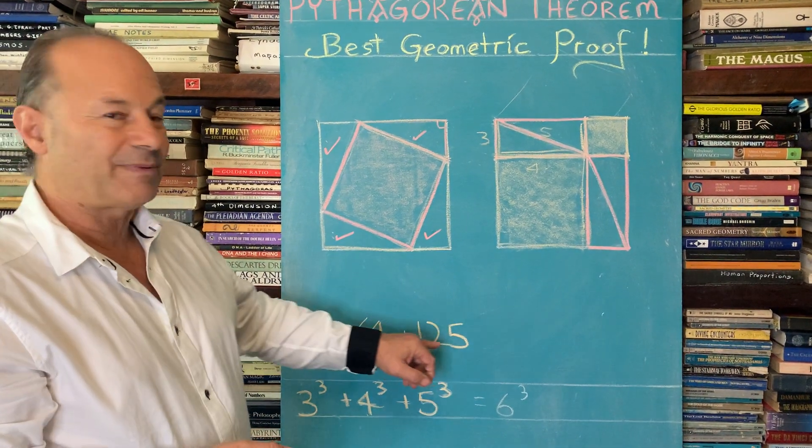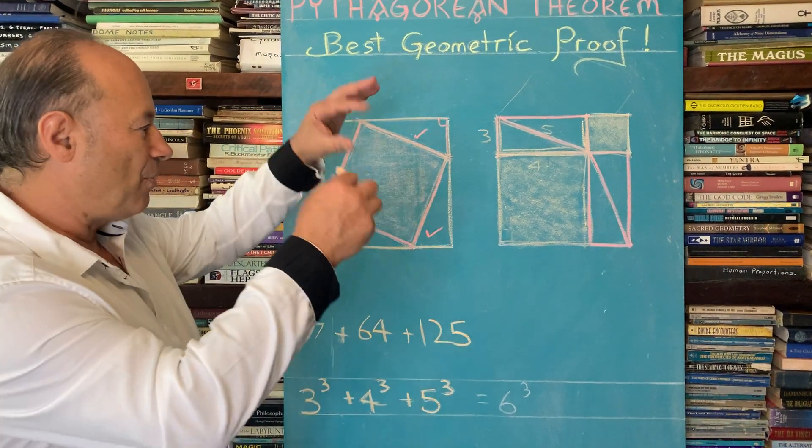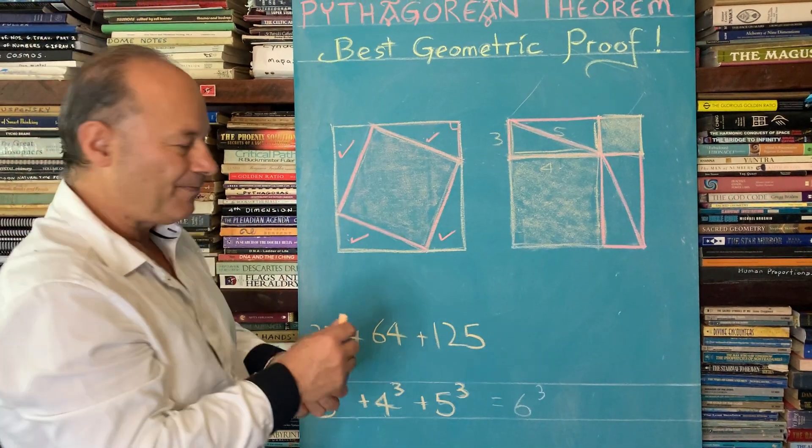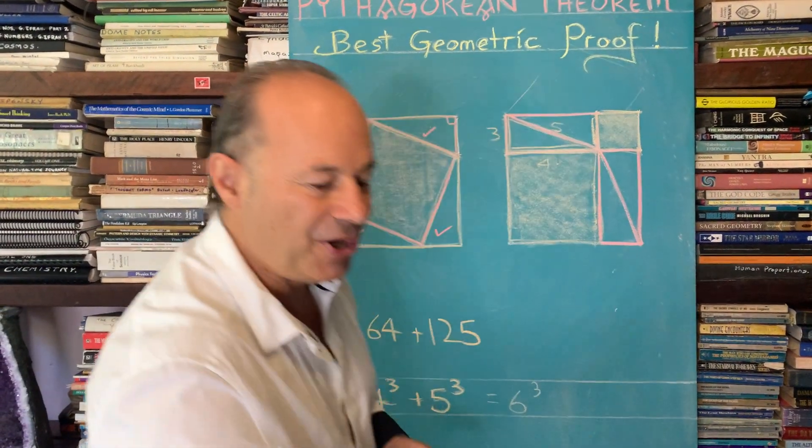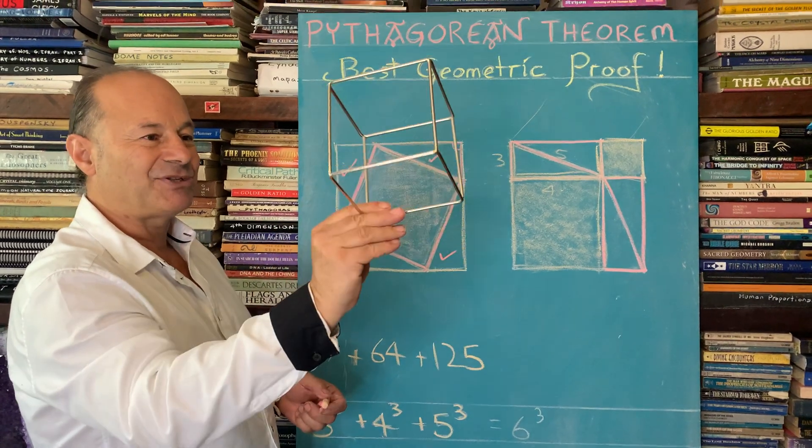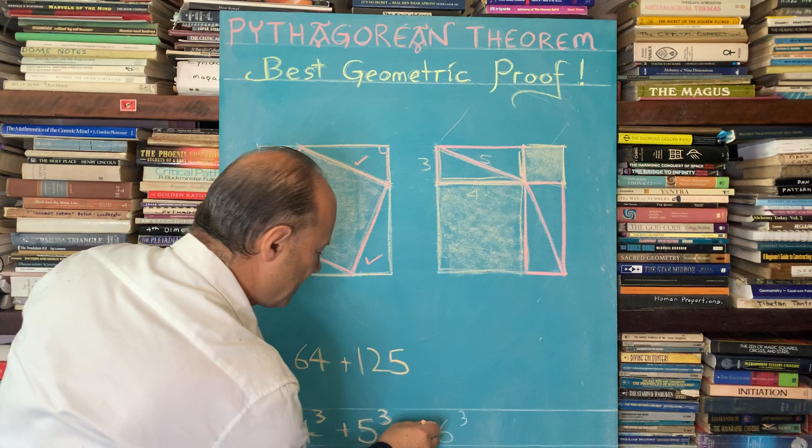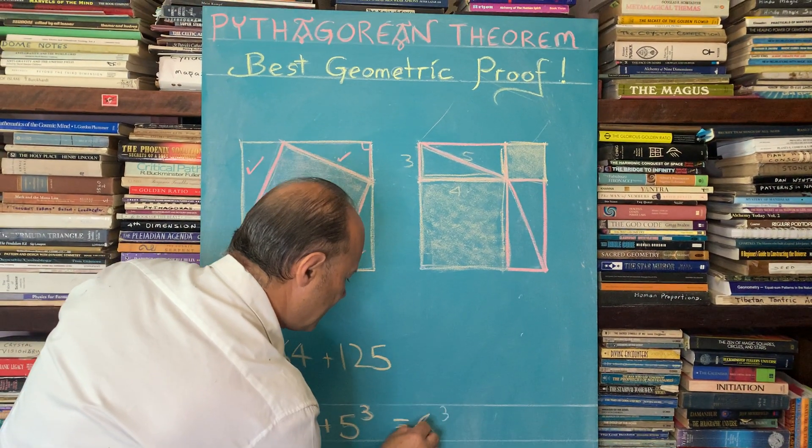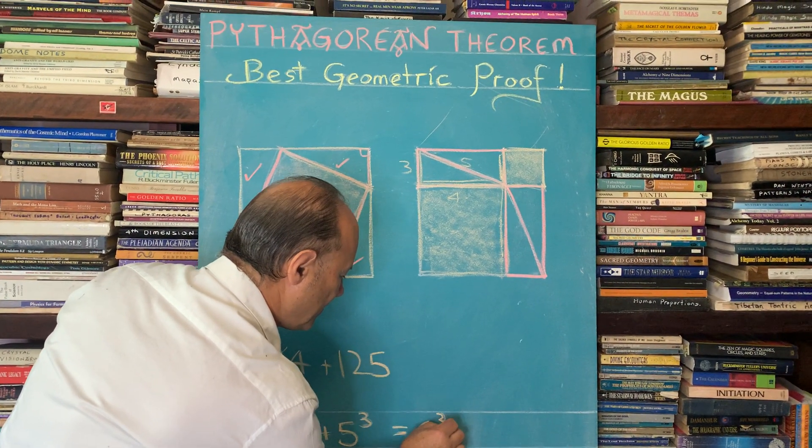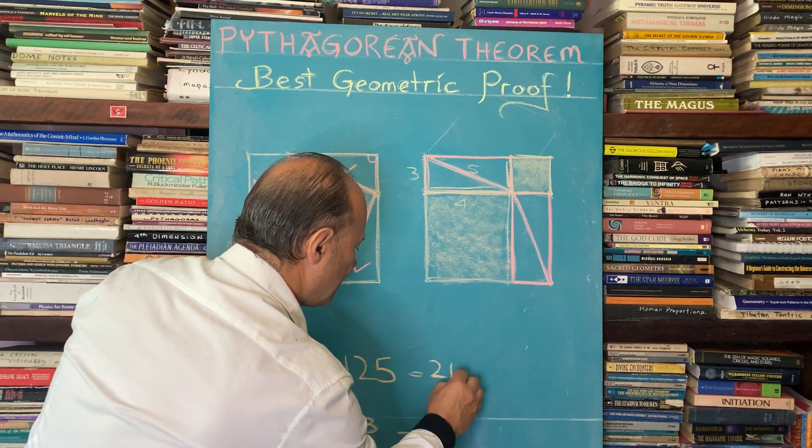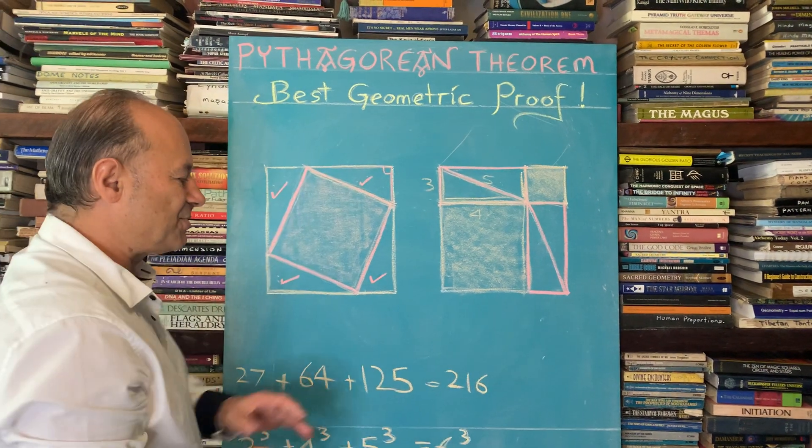The interesting thing here is that if you added up these three cubic numbers, 27 plus 64 plus 125, they would all rearrange and form another larger cube like this called six by six. Imagine six cubed is 216 little cubelets.